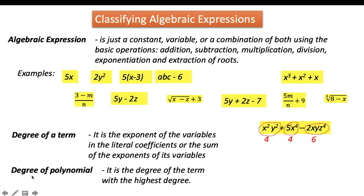When it comes to the degree of a polynomial, we are referring to the whole algebraic expression. The degree of a polynomial is the degree of the term with the highest degree. In this case, the third term has the highest degree, which is 6. Therefore, x squared y squared plus 5x to the 4th minus 2xyz to the 4th power is a polynomial of degree 6.